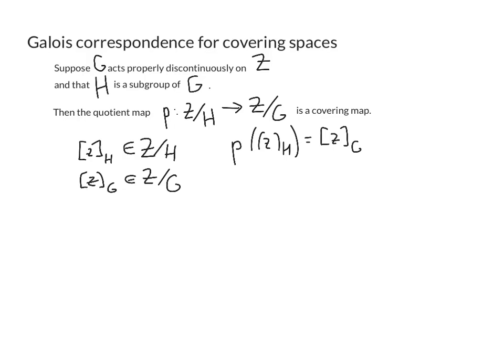So I claim this map P is a well-defined continuous map. So let's check first it's well-defined because if Z and Z prime represent the same equivalence class with respect to H, then well what does that mean? It means there exists some H such that Z equals Z prime H. This H lives in H, but in particular H lives in G because H is a subgroup of G. So that implies the equivalence class under G of Z and of Z prime equal. So it's definitely a well-defined map.